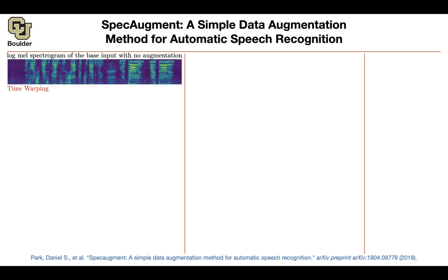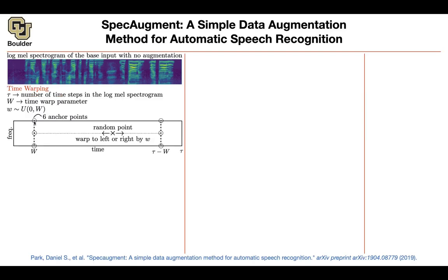One is time warping. What is that? You pick six anchor points on your spectrogram, and then you take one of these points at random in between, and you shift it to the left or to the right — that's going to warp your speech. This has parameters like tau, which is the size of your spectrogram. W is the time warp parameter, a hyperparameter that you choose. It's a uniform random number from zero to W, and it tells you how much you want to go left or right. That's warping.